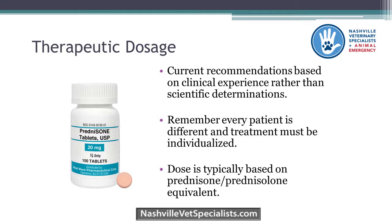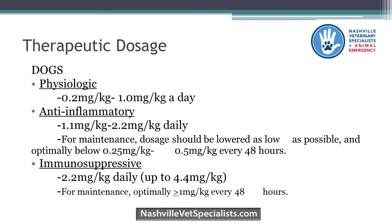Dosage recommendations are based on clinical experience and not scientific data, extrapolated from human medicine. Every patient is different and you need to individualize treatment. We talk about doses in terms of prednisone or prednisolone equivalents. For dogs, physiologic dose is 0.2–1.0 mg/kg/day; anti-inflammatory dose is 1.1–2.2 mg/kg; maintenance should be as low as possible — optimally 0.25–0.5 mg/kg every other day; and immunosuppressive doses usually start at 2.2 mg/kg/day, with the goal of getting below 1 mg/kg every 48 hours.